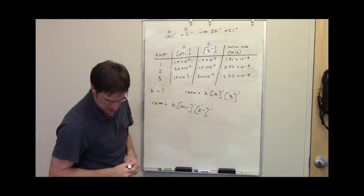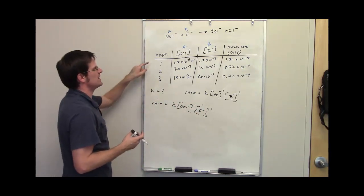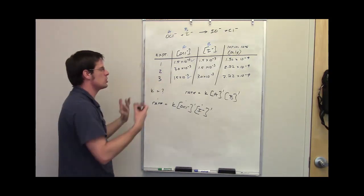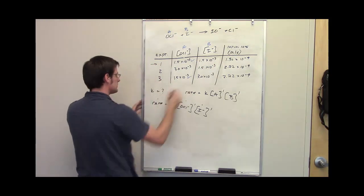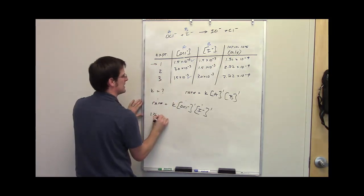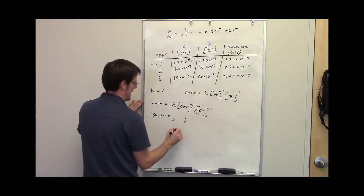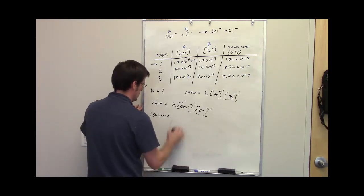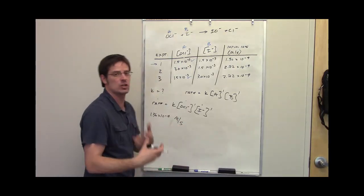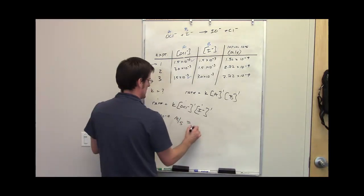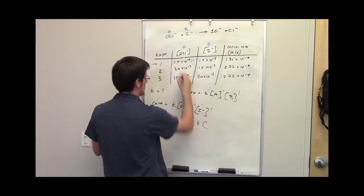Let's do that with the numbers from experiment 1. It should work out that it doesn't matter which experiment you pick; you should get the same answer. So if I take my rate, which is 1.36×10^-4 molar per second, I set it equal to K. I should show units so that when we're done, we get the correct units for K.